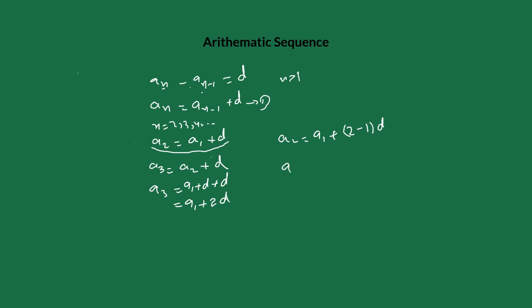For a_3, we can write a_1 plus (3 minus 1) times d. Looking at these two equations: a_2 equals a_1 plus (2 minus 1) times d, and a_3 equals a_1 plus (3 minus 1) times d. Continuing this pattern, the general term formula is: a_n equals a_1 plus (n minus 1) times d. That is the general formula for the nth term of an arithmetic sequence.